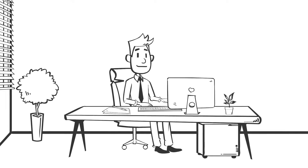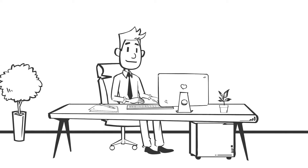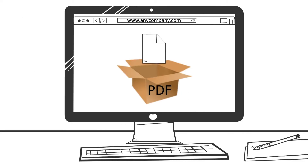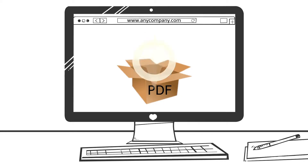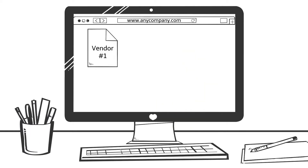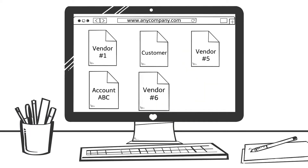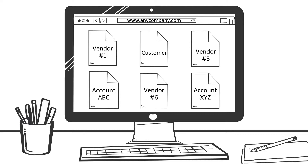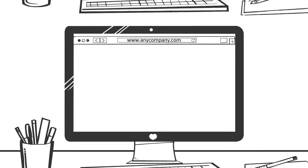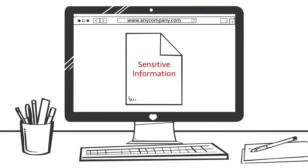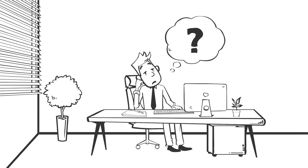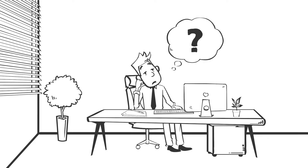So you've got a PDF file that may have as many as 200 pages, or as little as just 2. You click on the file, and oh my! You realize that each page corresponds to completely different customers, vendors, and accounts. Or, you just realize that some pages contain sensitive information that has to be removed. So what do you do now?